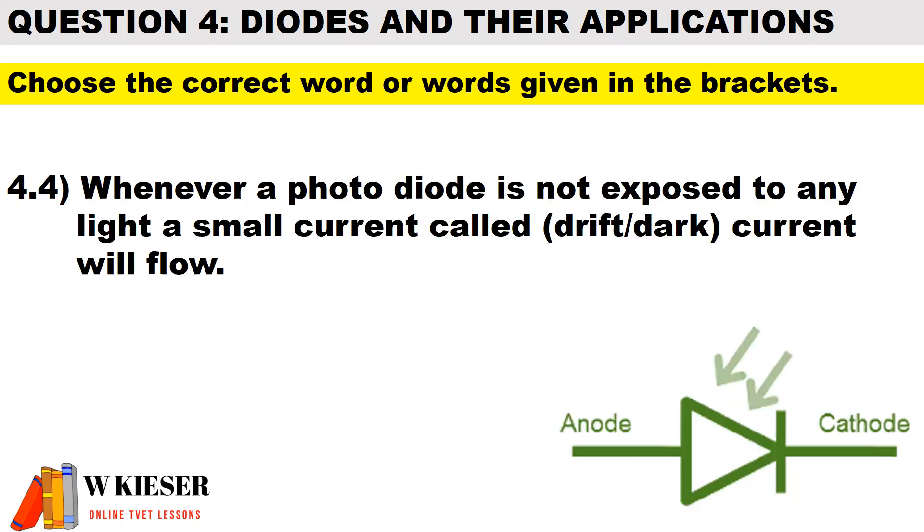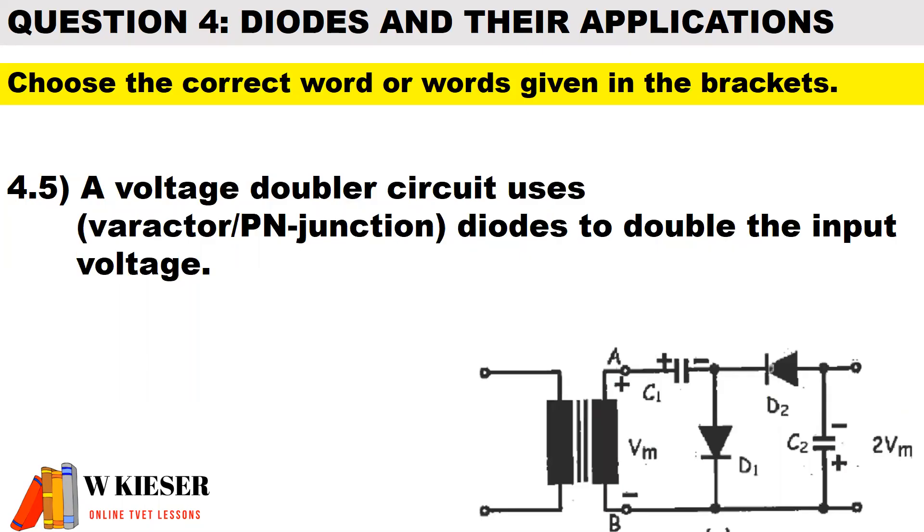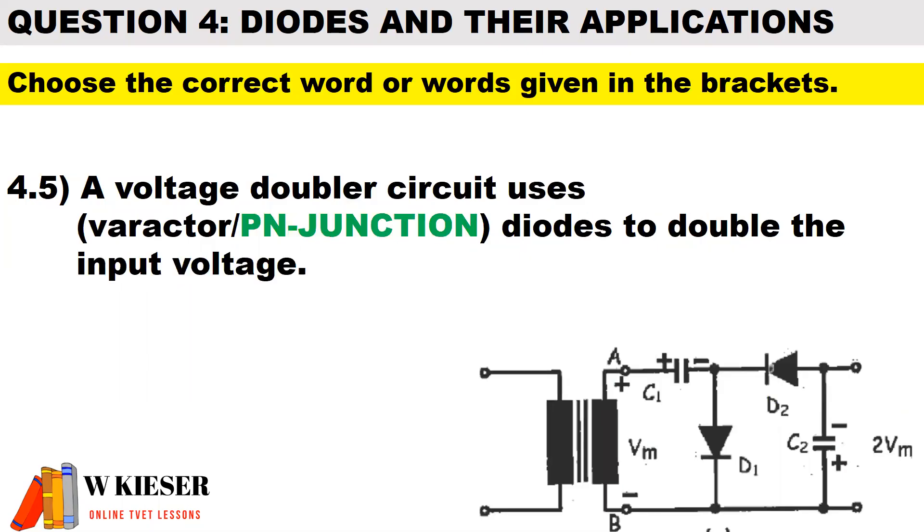In question 4.4, whenever a photodiode is not exposed to any light, a small amount of current called dark current will flow. A voltage doubler circuit uses PN junction diodes to double the input voltage.